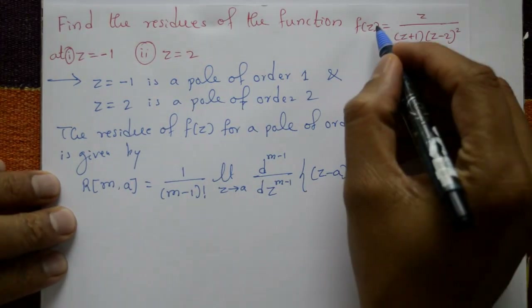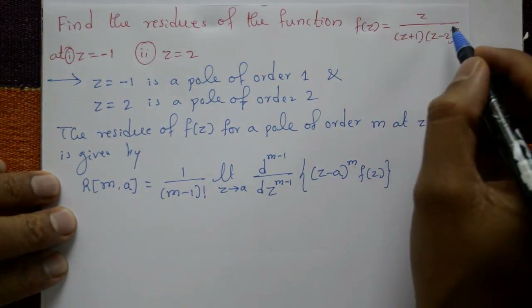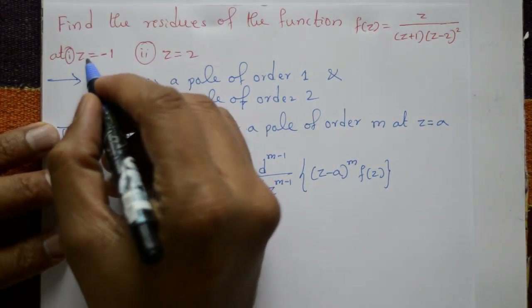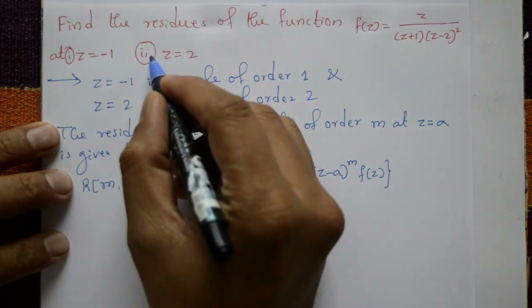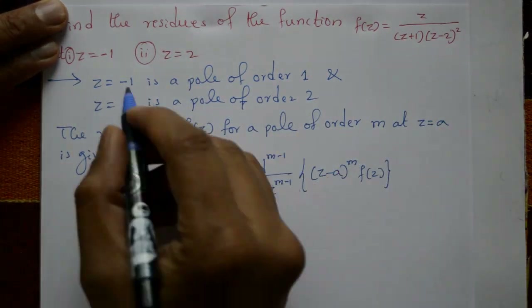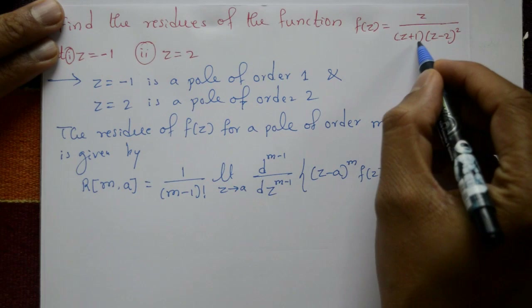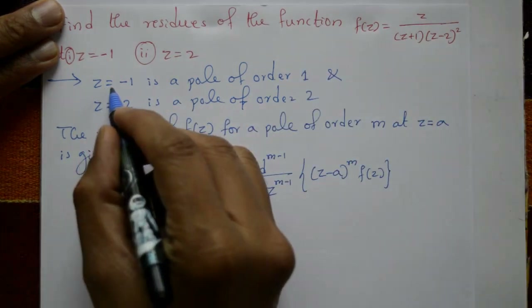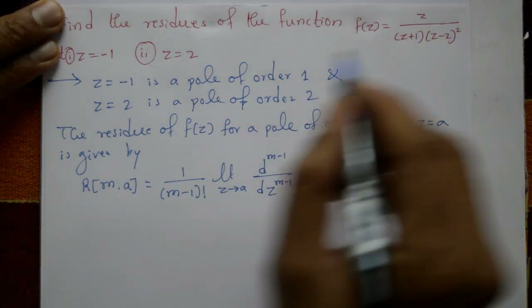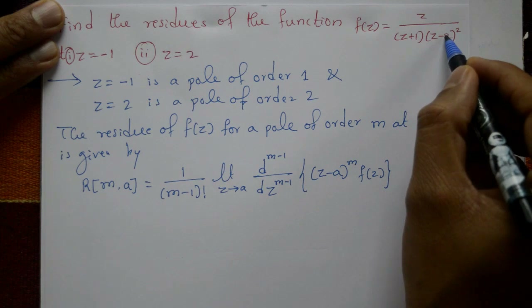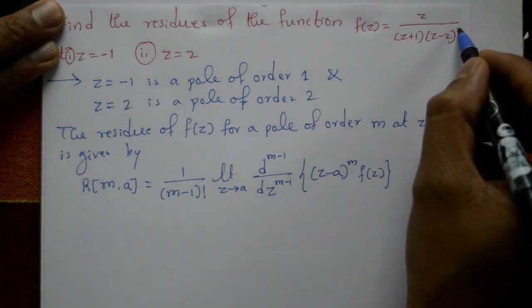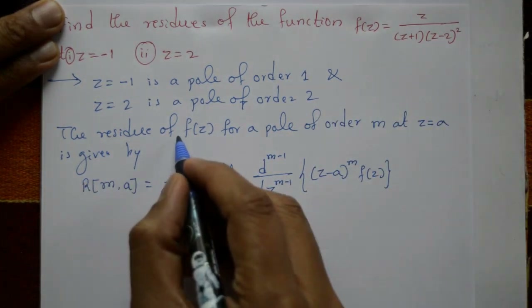Find the residue of the function f(z) = z / [(z+1)(z-2)²] at: Case 1: z = -1, and Case 2: z = 2. Now, z = -1 means z plus one equals zero, so z = -1 is a pole of order one. And z = -1 means z = a where a = -1. For Case 2, z = 2 is a pole of order two.